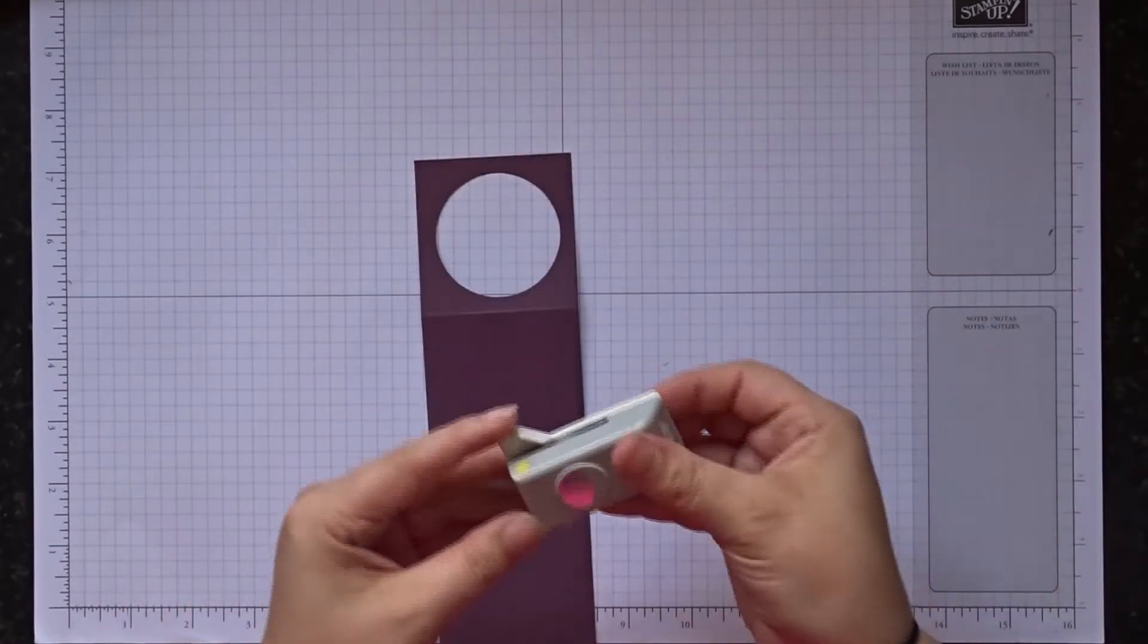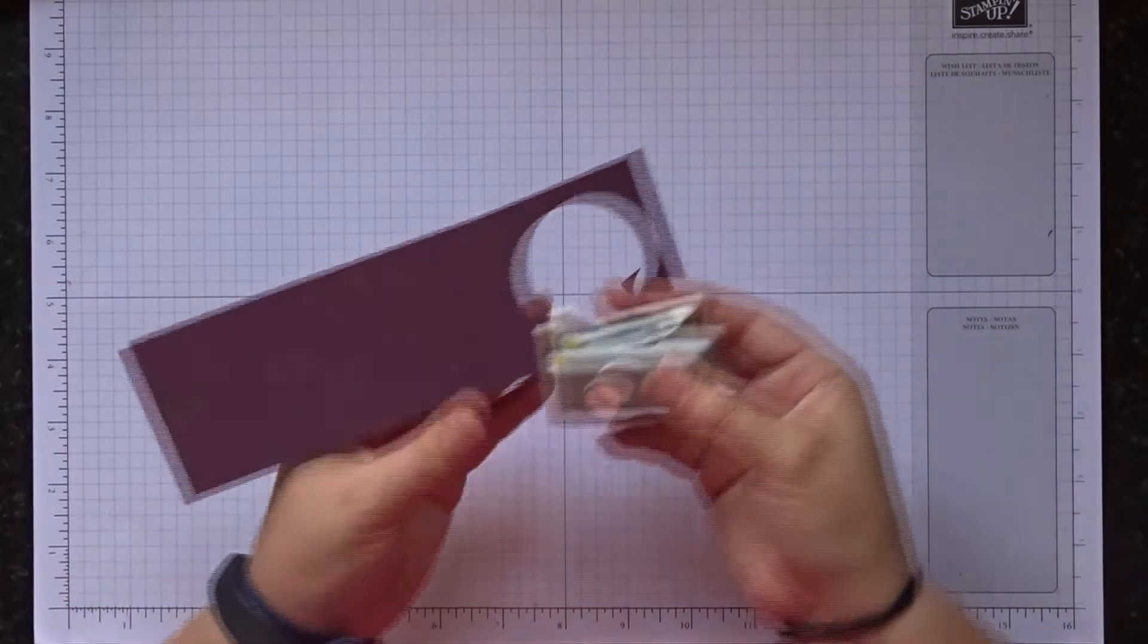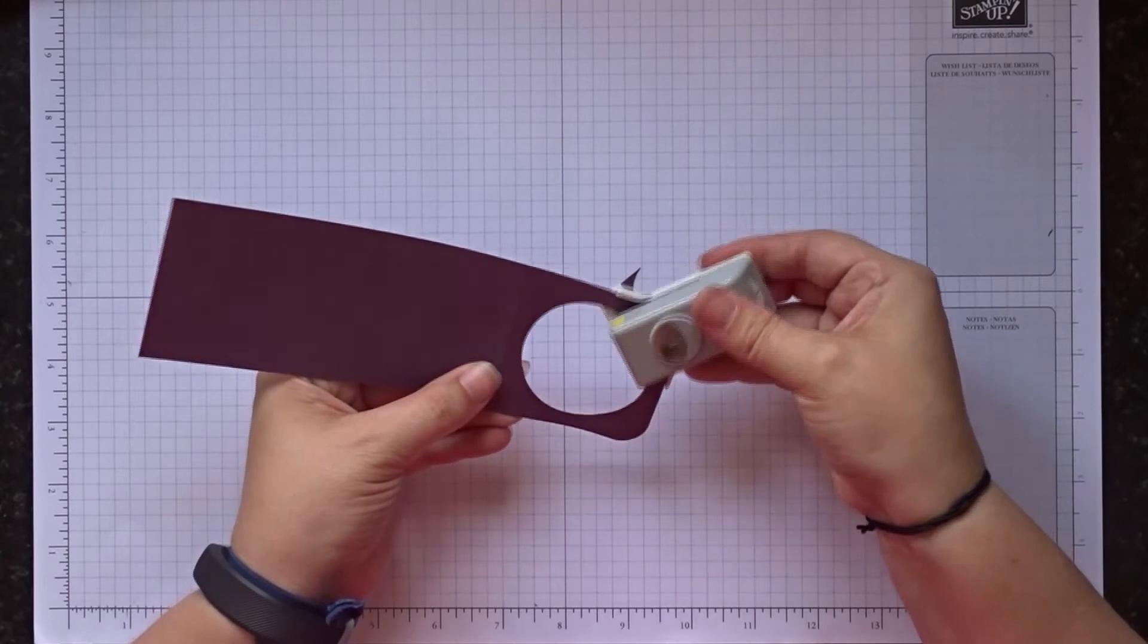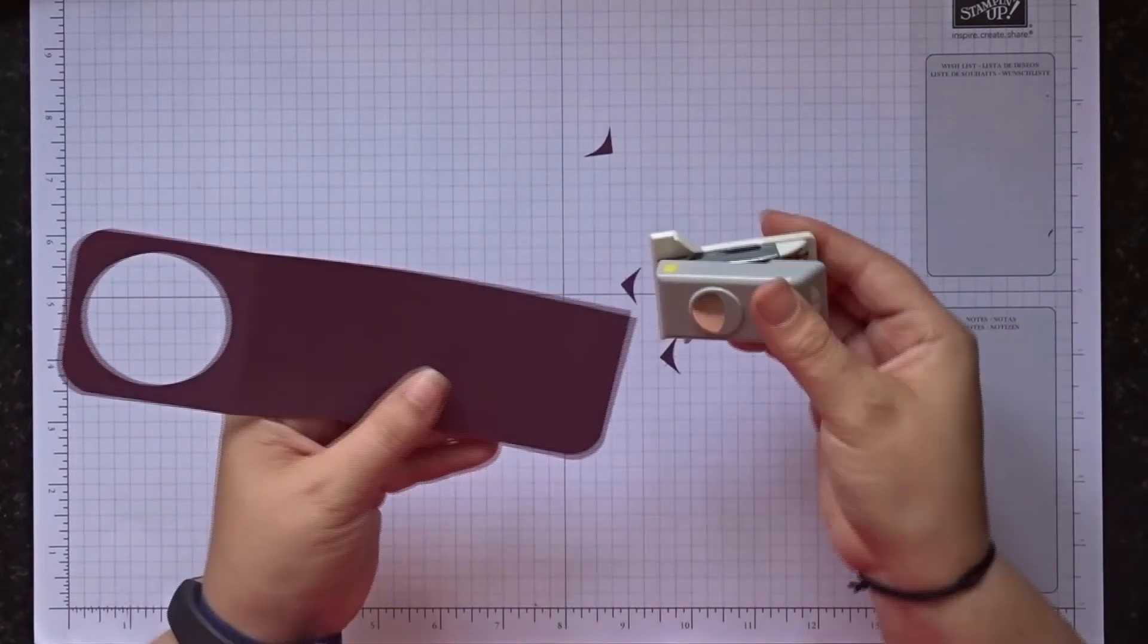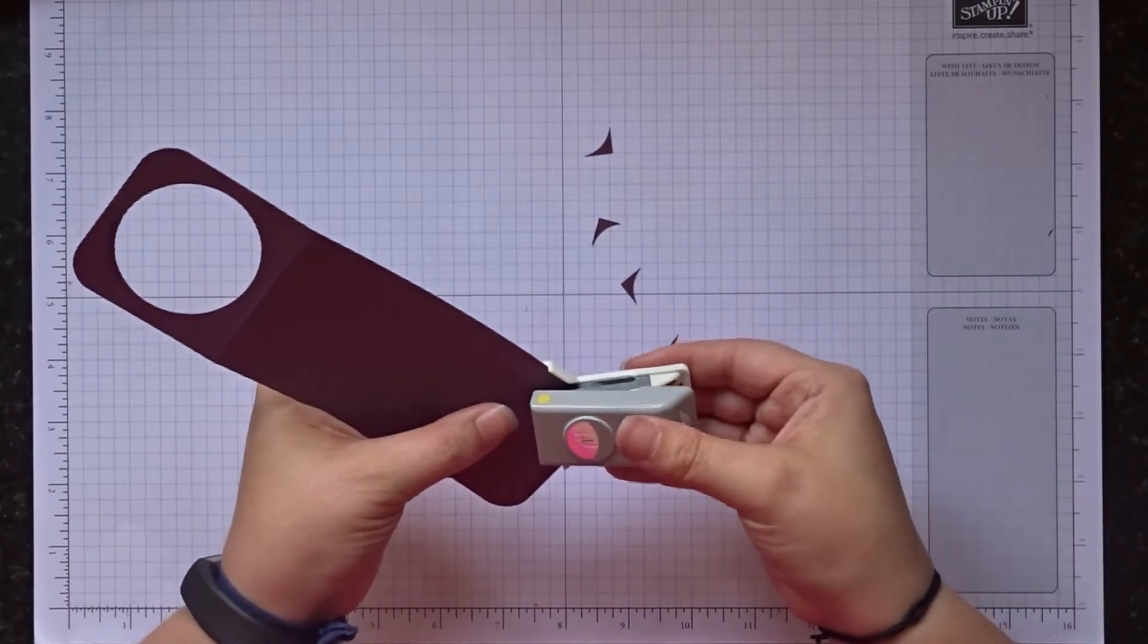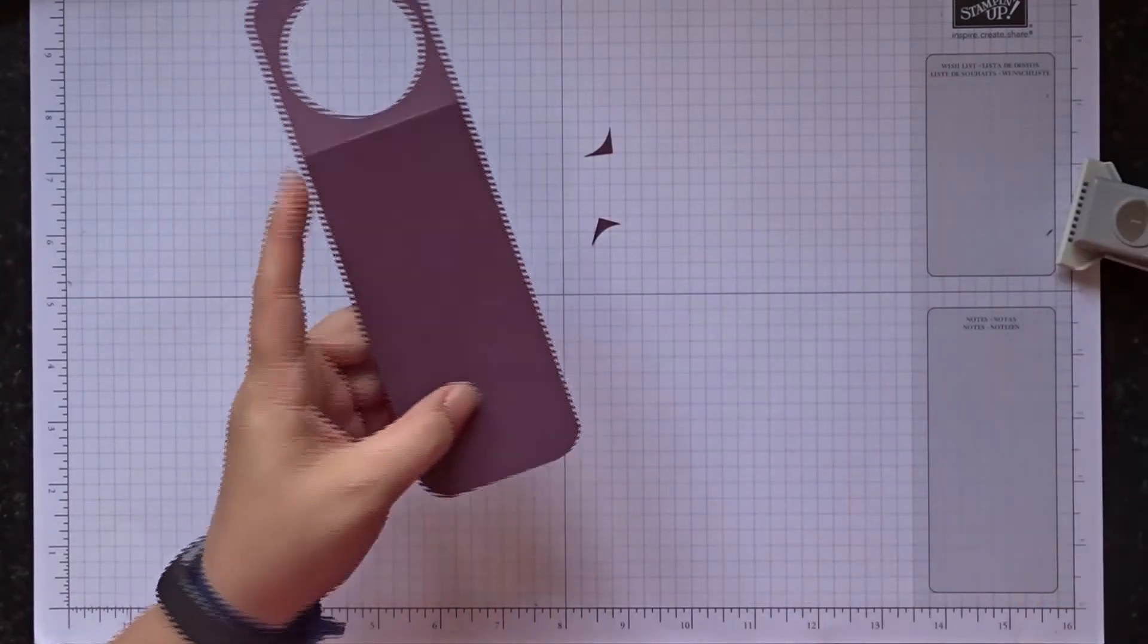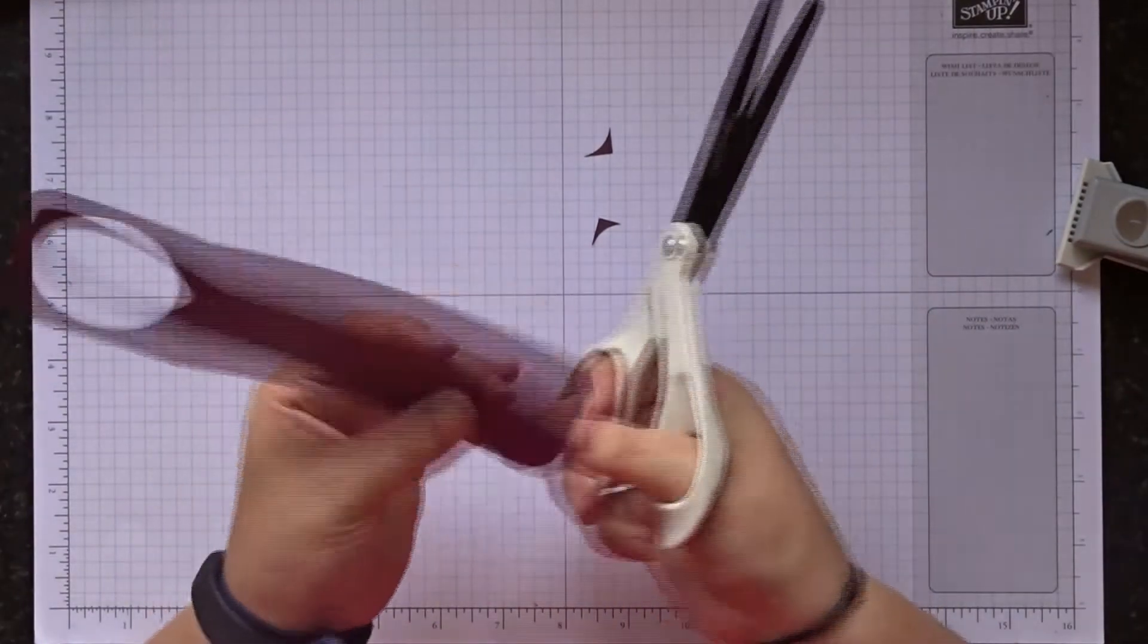Then get your inch punch, your inch corner, and just round off all four corners. Very simple. There's always one that goes wrong and if you do just get your scissors and just neaten it up. Absolutely fine.